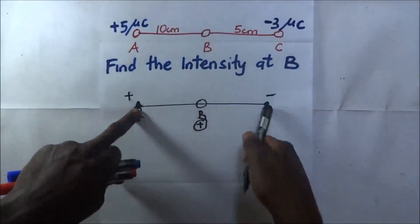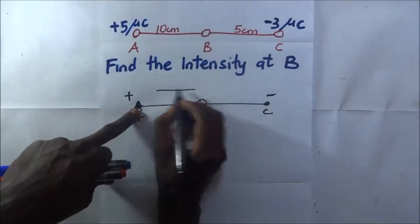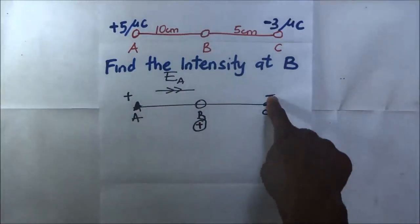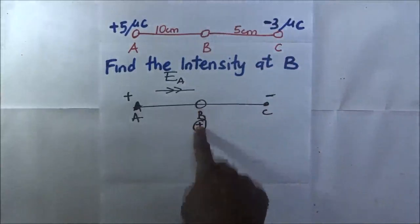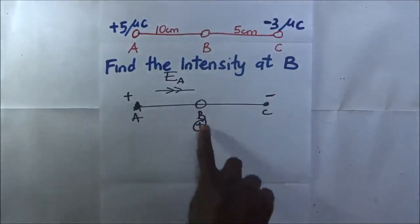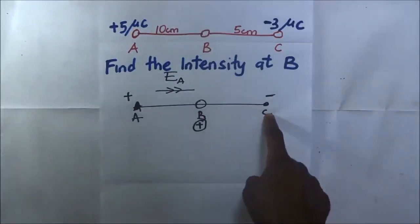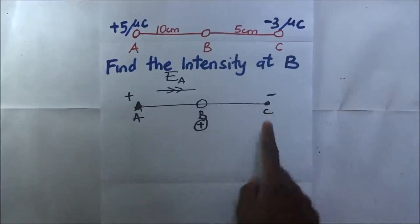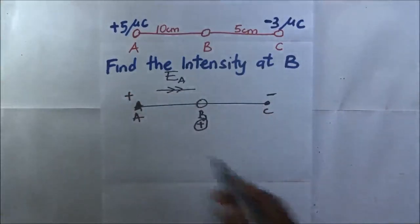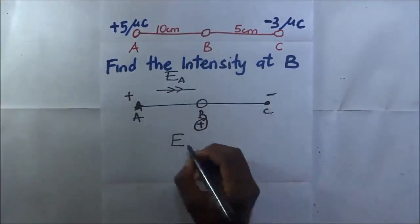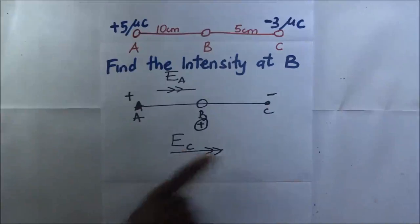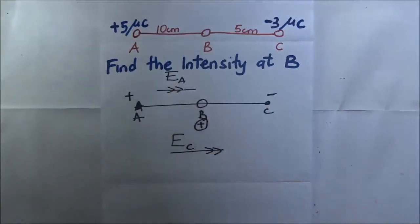Since B is positively charged, there will be repulsion between A and B, so the intensity at B due to A acts in the direction away from A. Looking at point C, which is negatively charged — since B is positive and C is negative, they are unlike charges and will attract. So the intensity at B due to C also acts in the same direction as the intensity due to A. Since both act in the same direction, we simply add the two.